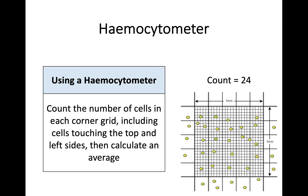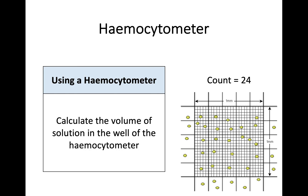If you're given a question asking for an estimate of cell count, you use this method. Then the final part of calculating the number of cells within the hemocytometer is to calculate the volume of the solution within it. In this picture, the grid is one millimetre across and one millimetre down. However, the question stem will also tell you the depth of the hemocytometer — say, one millimetre or perhaps 0.1 of a millimetre. You need all three measurements to calculate the volume of that well.